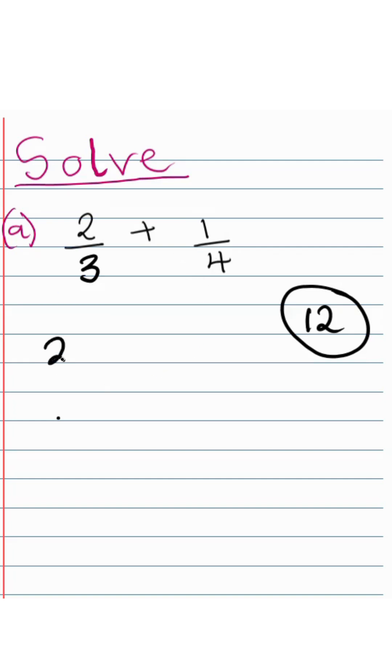So let's say for 2 over 3, how can we make 3 become 12? We can make 3 become 12 by multiplying it by 4. And then we have to multiply also the numerator by 4 because we can't just multiply the denominator alone. So if we multiply 2 by 4, we get 8. And then 3 by 4, we get our 12.